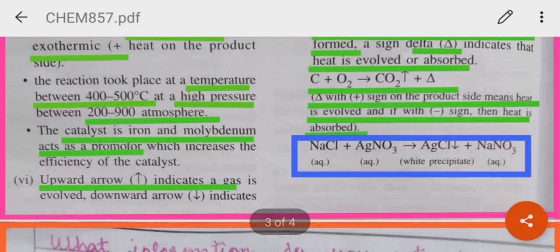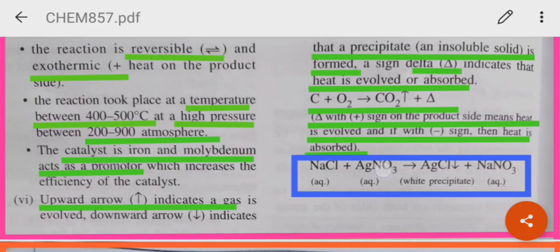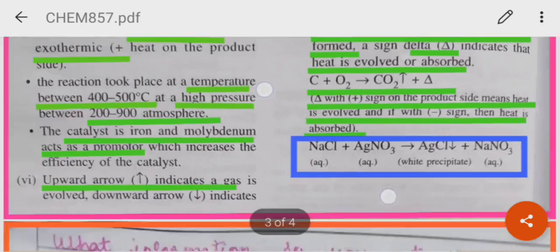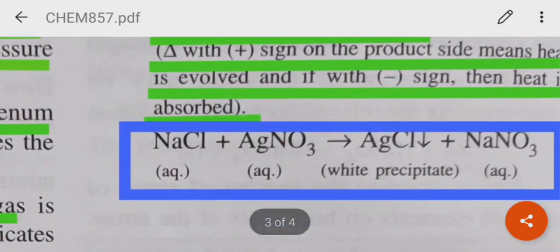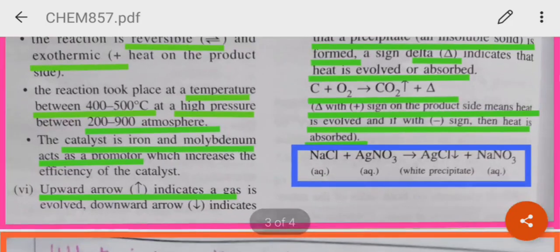Then you see another reaction: NaCl plus AgNO3, both in aqueous state. Aqueous state means in water solution. When they are mixed together, what do we get? We get a white precipitate of silver chloride and sodium nitrate in the aqueous state.